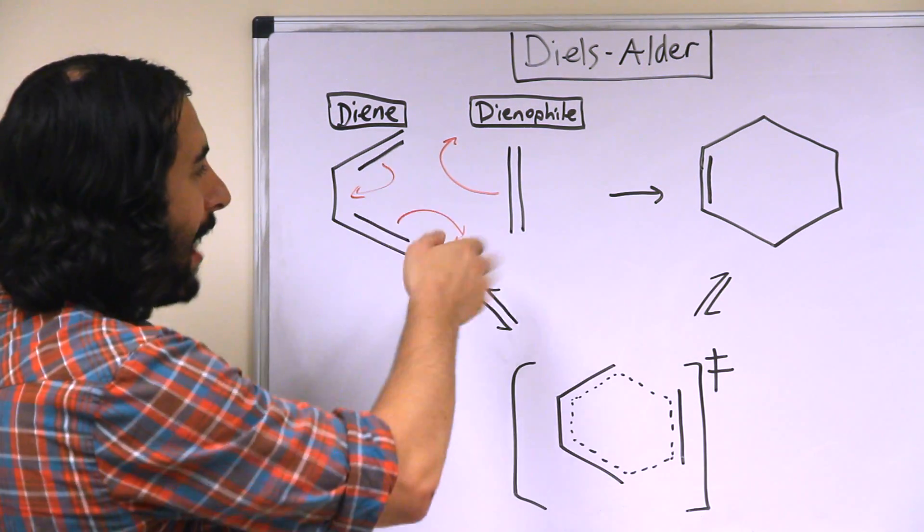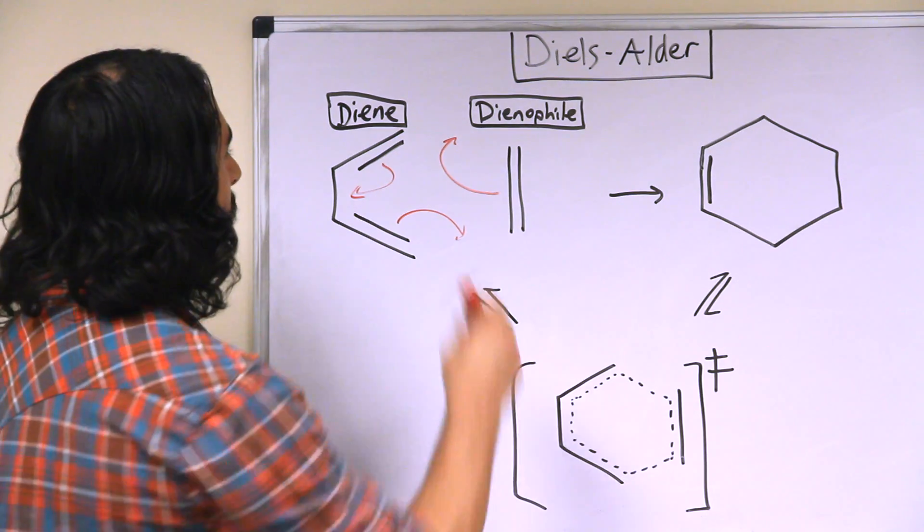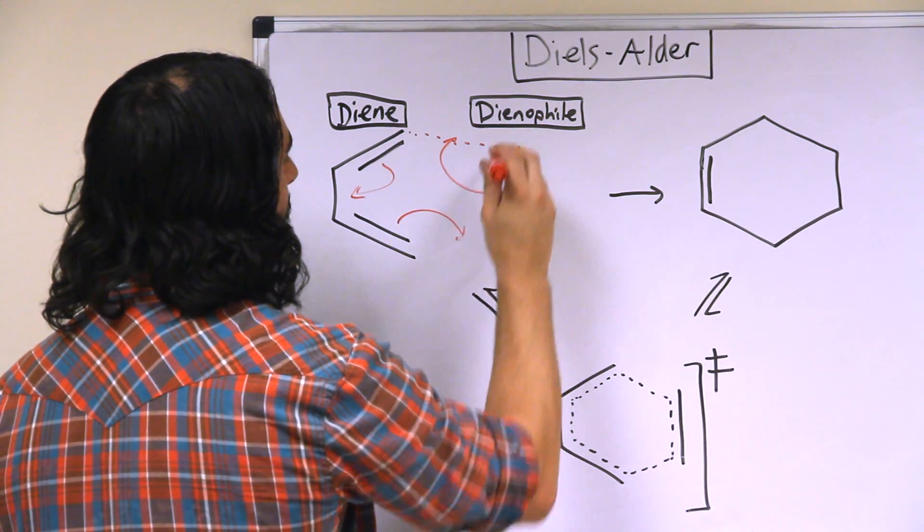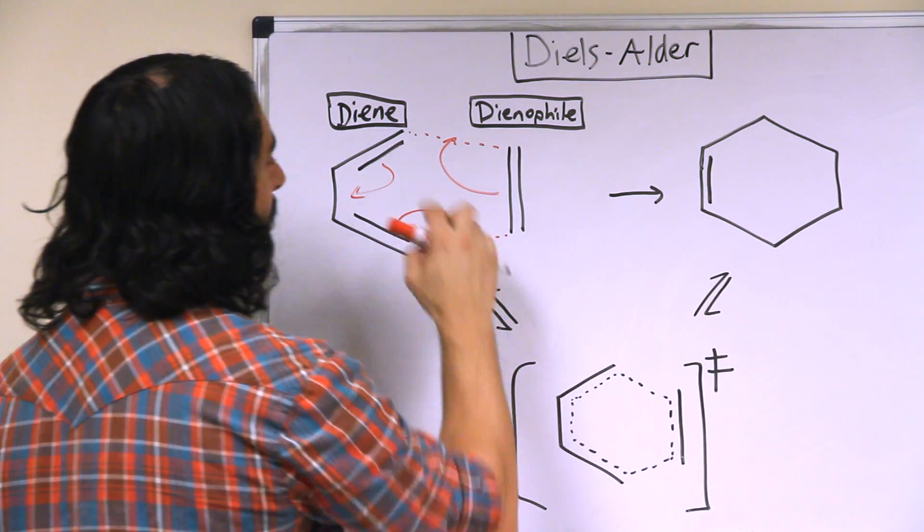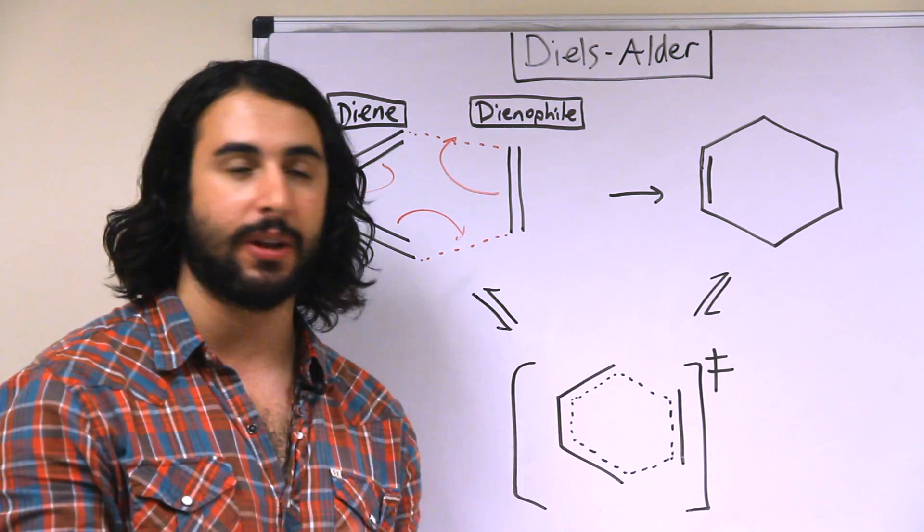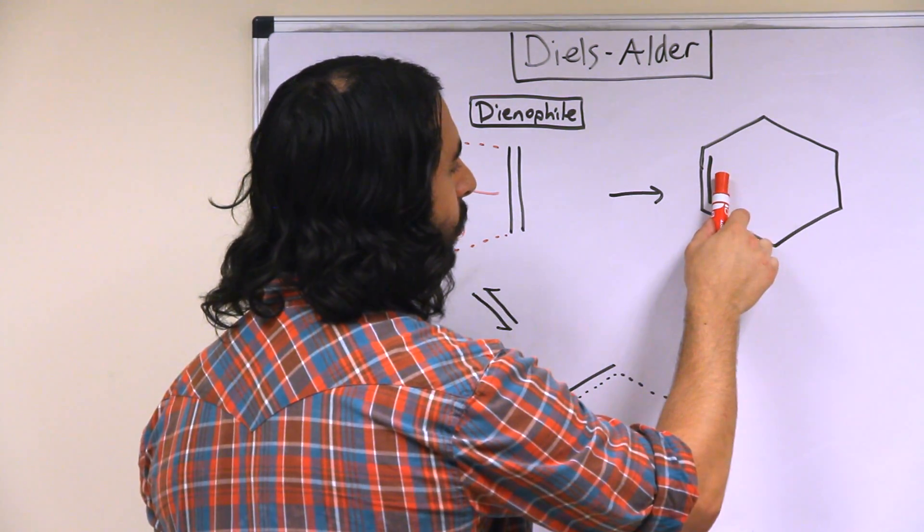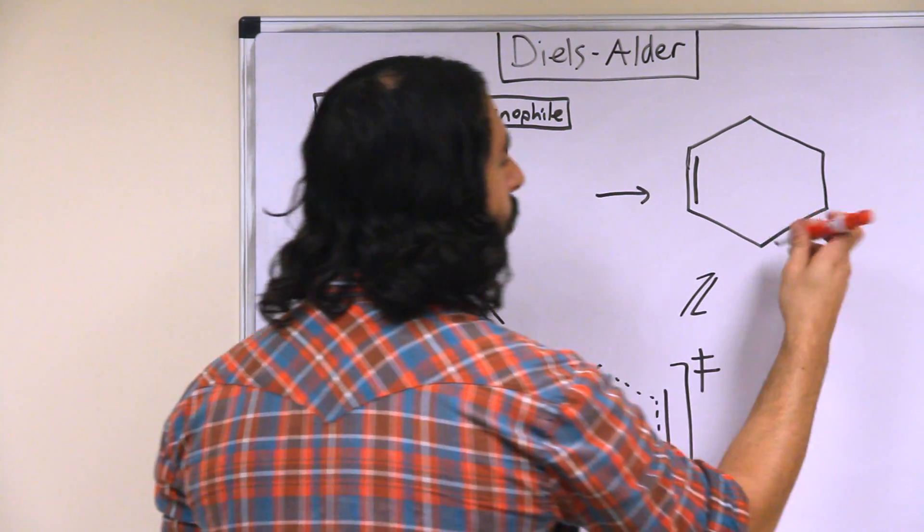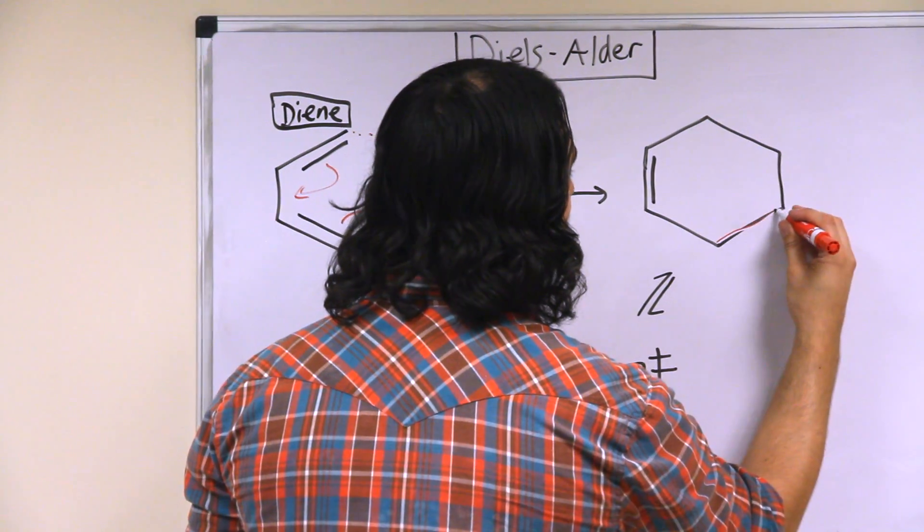It's not the case that these pi bonds are moving one at a time. But what ends up happening is that whereas we had three pi bonds to begin with shuffling around, what we're going to get is one pi bond remaining and two new sigma bonds. So that's these here.